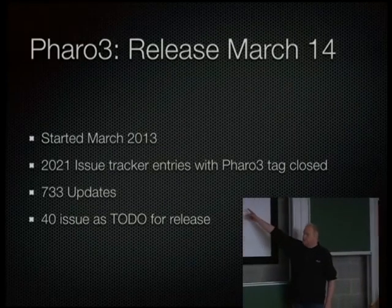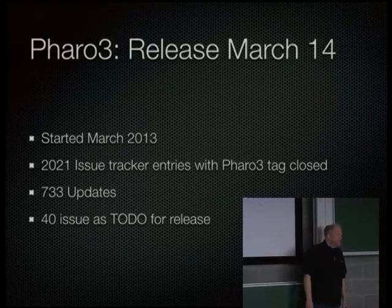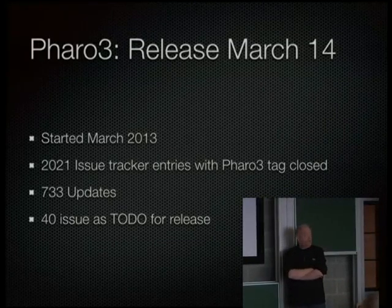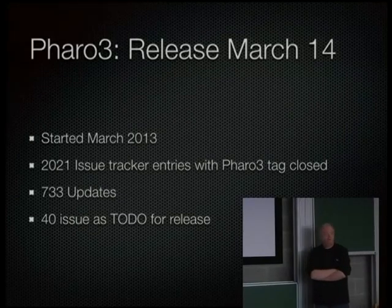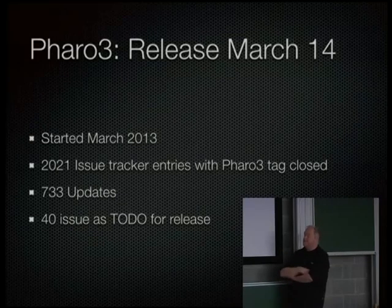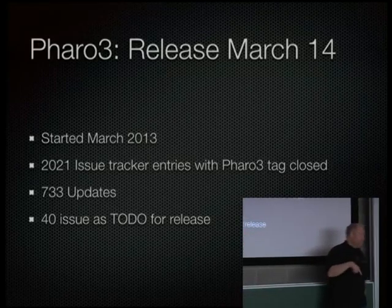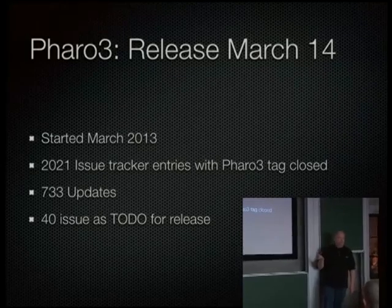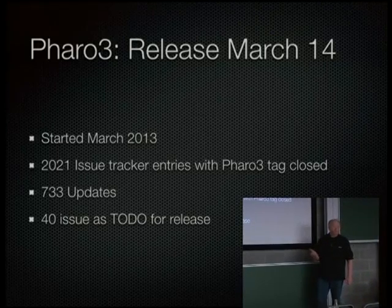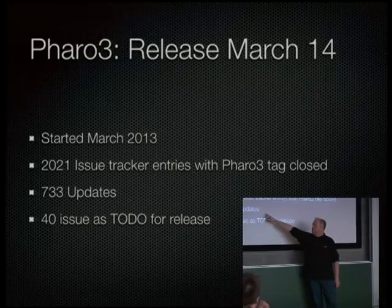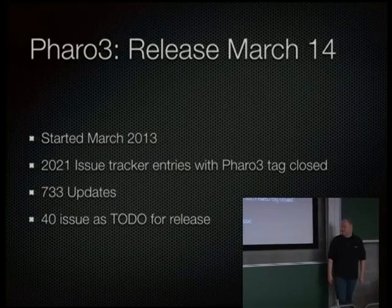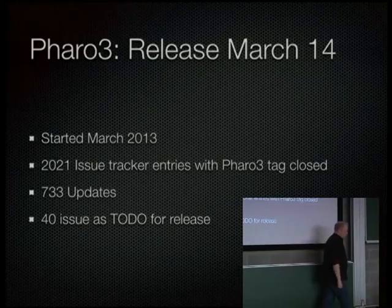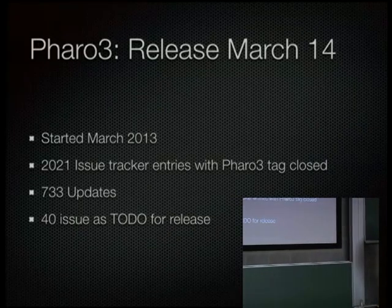If you look at the bug tracker and filter for all issue tracker entries tagged Pharo 3, you see that 2021 were closed since March — and this is not even 300 days. That means multiple things are happening every day. When people submit an issue tracker fix, the fix is automatically verified by running all tests, and then we combine three or four of those into a so-called update, of which we have around one to three per day. We've had 733 updates for Pharo 3 since March 18th last year.